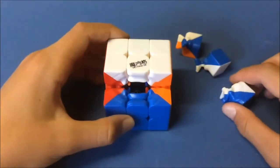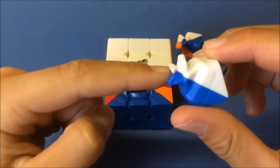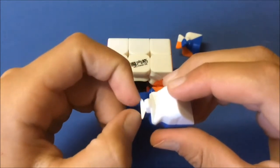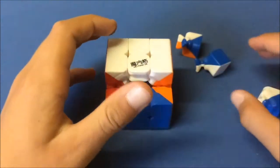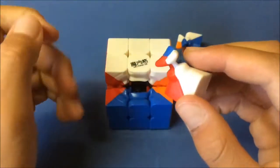Alright, so the mechanism on the edge pieces is kind of weird. I don't really understand why they have this little plastic thing here. It seems like it would break pretty easily but I haven't had any break yet. The corners are pretty standard and of course they just snap together because it's stickerless.